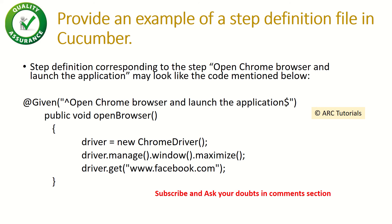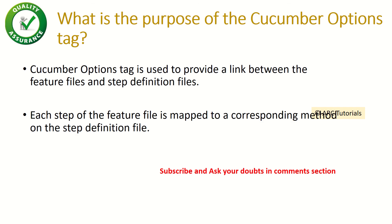What is the purpose of the cucumber options tag? The cucumber options tag is used to provide a link between the feature files and the step definition files. Each step of the feature file is mapped to a corresponding method in the step definition file — that is how we link the step definition and feature files.